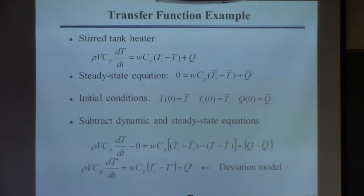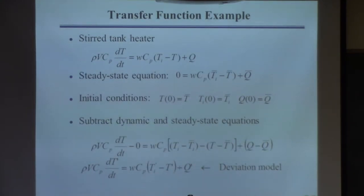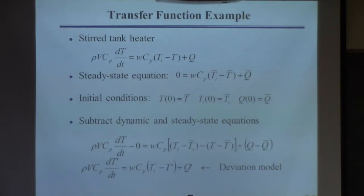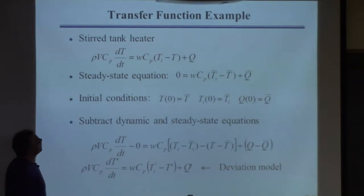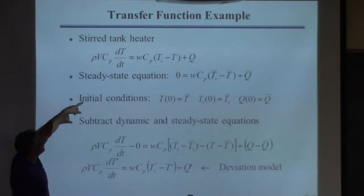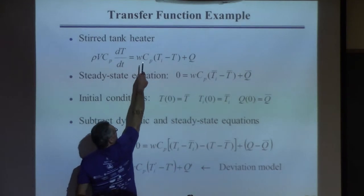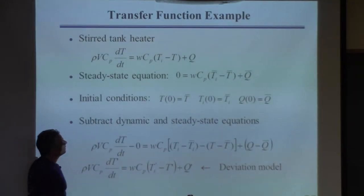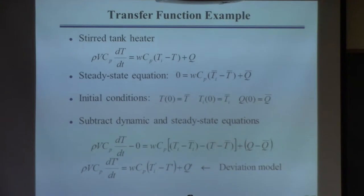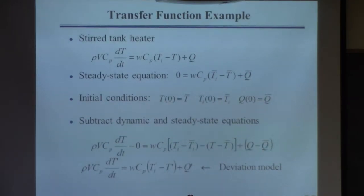We derived the equation for the system on last Thursday — this was the energy balance. T is the temperature in the tank, t is time, that's mass flow rate in and out of the tank which is the same, CP is the heat capacity of the fluid, Ti is the inlet temperature, T is the outlet temperature, Q is the heat we're putting in, rho is density, and V is the volume of fluid in the tank which is constant.